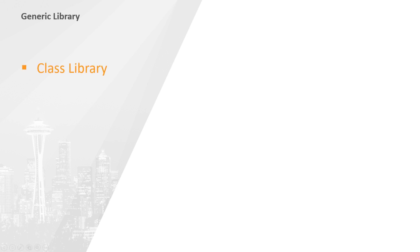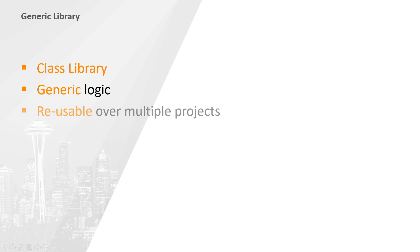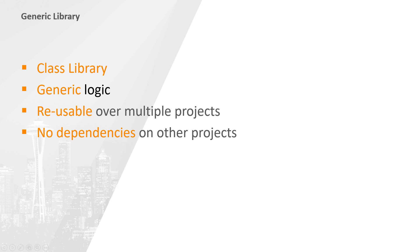So what exactly are generic libraries? Well, they are a type of class library that was not written for one specific project, but rather contains generic logic that can be reused in many other projects without having to make modifications. Because of this, code within a generic library has to be as generic as possible and can have no dependencies on other projects. For example, a method that converts currencies or temperatures will be right at home in a generic library. Project-specific functionality, such as code that verifies whether a customer has a premium account in our database, is not.